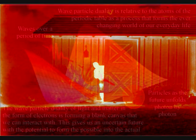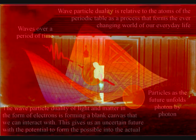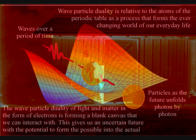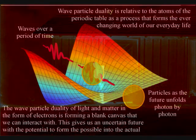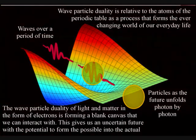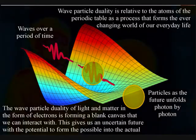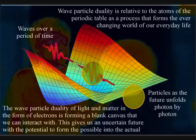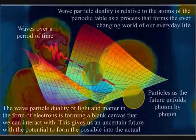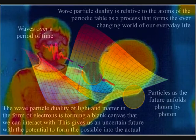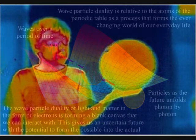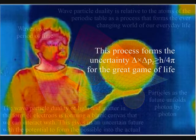In these videos I say that light is a wave over a period of time, and only has particle characteristics when it interacts with the atoms of the periodic table. Within such a process, the wave-particle duality of light and matter in the form of electrons is forming a blank canvas that we can interact with. This gives us the potential to form the possible into the actual, with an uncertain future unfolding photon by photon.